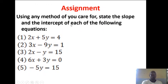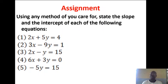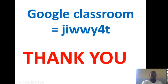The assignment says: state the slope and the intercept of each of the following equations. Equation 1: 2x + 5y = 4. Equation 2: 3x − 9y = 1. Equation 3: 2x − y = 15. Equation 4: 6x + 3y = 0. Equation 5: 5x − 5y = 15. Follow this work meticulously, make your notes, answer the questions, and submit. Thank you, my dear students. God bless you. Keep staying at school and staying safe.